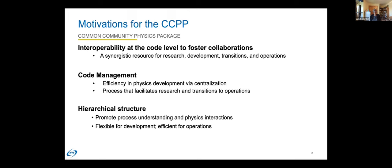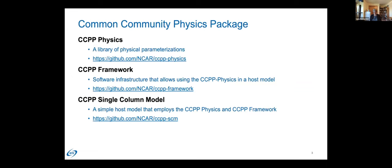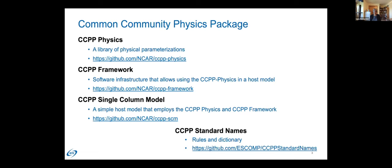With those motivations, we can introduce the three main parts of the CCPP. First is the CCPP physics, which is a library of physical parameterizations. Second is the framework, a software infrastructure that allows using the CCPP physics in the host model. Third, the CCPP is distributed with its own single column model, a simple host model employing both the CCPP physics and the framework. We also have the CCPP standard names repository — not code, but rules and a dictionary for the standard names used as part of the CCPP.